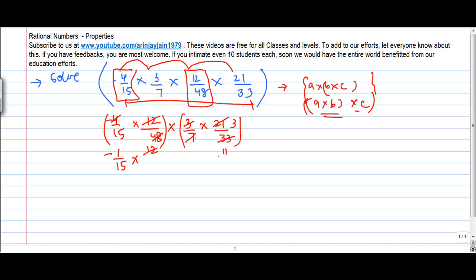3 goes into 33 eleven times, so I get 3/11. -1 times 3 gives me -3, and 15 times 11 gives me 165.